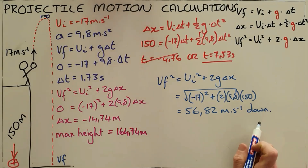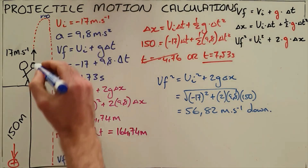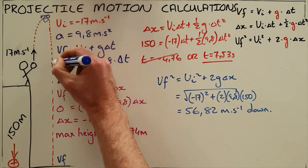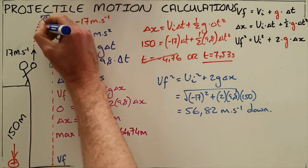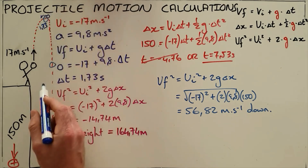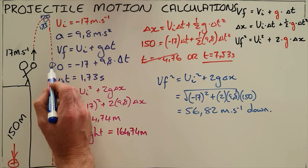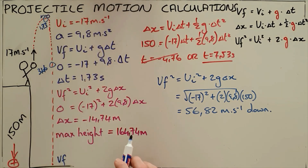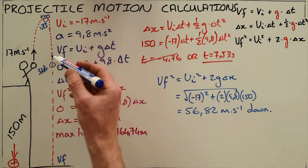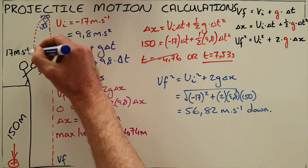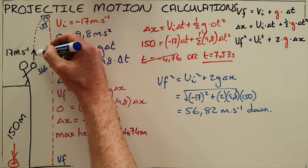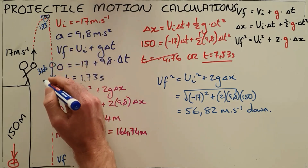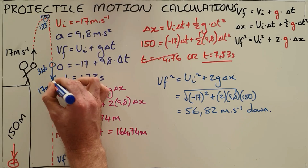Two important takeaways: First, the time to reach maximum height always equals the time to return to the starting point. In this case, 1.73 seconds up and 1.73 seconds back equals 3.46 seconds total to return to the starting point. Second, if the initial velocity was 17 m/s upward, then when the object returns to its starting point, its velocity will be 17 m/s downward.